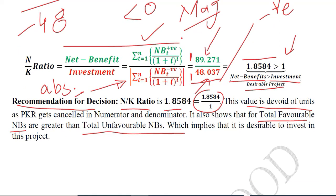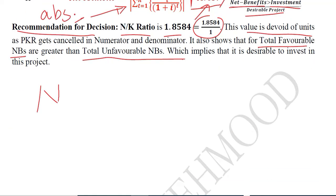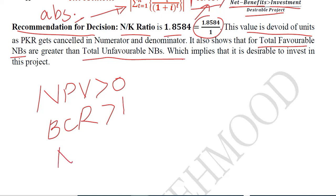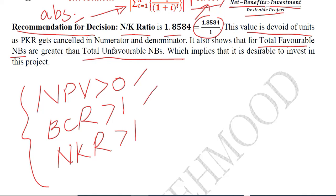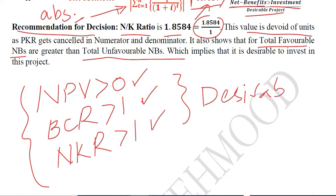Recalling the other measures: the NPV was positive, and the BCR was greater than 1. Now we have also seen that the NBIR is greater than 1. So the same project is verified as desirable by NPV, BCR, and the Net Benefit Investment Ratio — all three discounted measures of project worth are signaling in the same direction with no controversy.